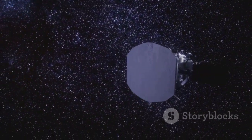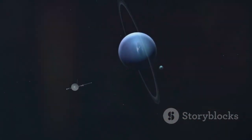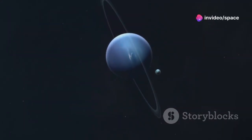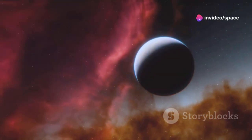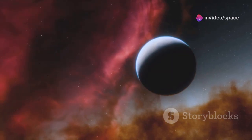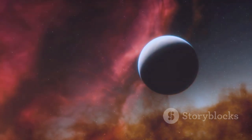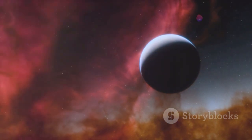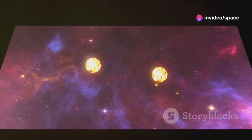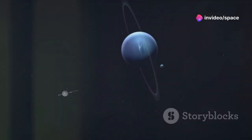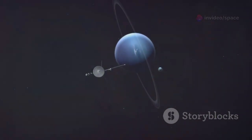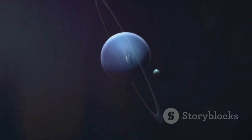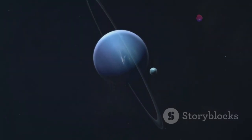For generations, Neptune was just a faint, mysterious speck in the night sky, a distant icy enigma barely glimpsed through the best telescopes of the past. But Neptune is more than a remote blue orb. It's a cosmic time capsule, preserving secrets from the dawn of our solar system and offering clues about how planets and moons first took shape. While Earth has been transformed by life and shifting continents, Neptune has remained almost unchanged for billions of years. Its ancient atmosphere and icy heart give us a rare glimpse into the early days of our cosmic neighborhood.